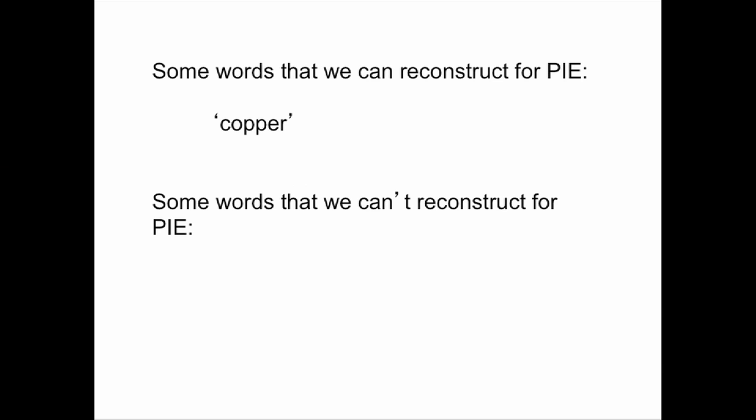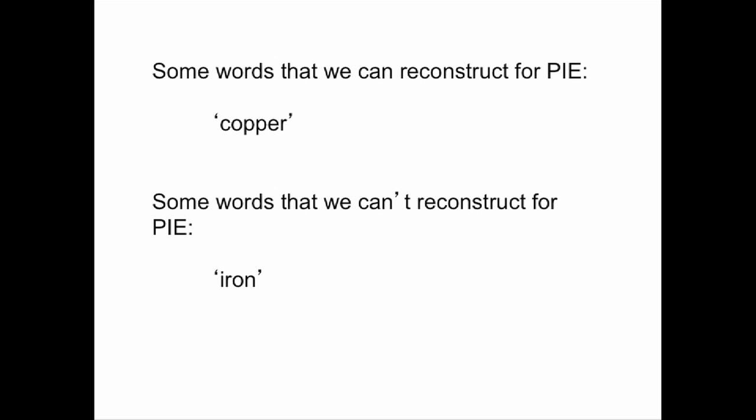There are other ways of figuring out things about ancient people who never wrote anything down — you can put on a pith helmet, get a shovel, and dig up their graves and pots. That takes a lot of work and you'll get hot. Instead, you can go to the air-conditioned library and look at languages. Words we can reconstruct for Proto-Indo-European include a word for copper, which tells us they had copper — significant because it locates them after the Copper Age. On the other hand, we can't reconstruct a word for iron, so they hadn't yet figured out iron-working technology.